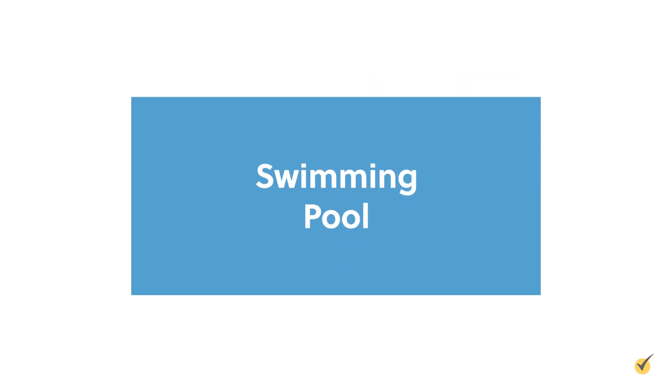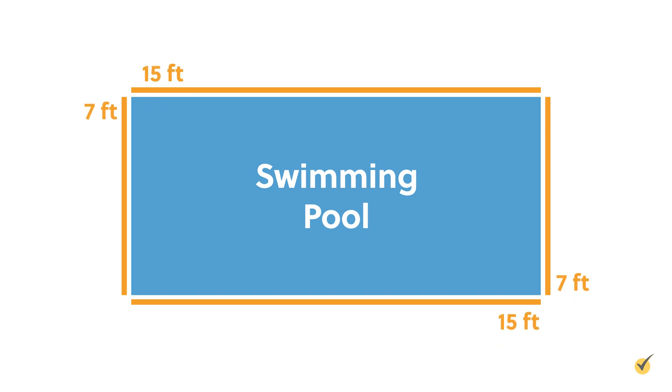Let's use a rectangular swimming pool as an example. We want to add a safety fence along the outside of the pool. In order to figure out how much material is needed, we first need to figure out the perimeter of the pool. The length of the pool is 15 feet and the width is 7 feet.